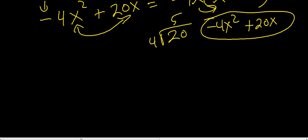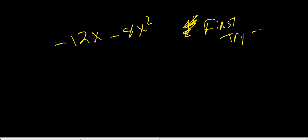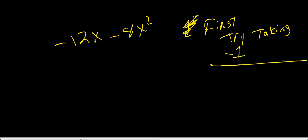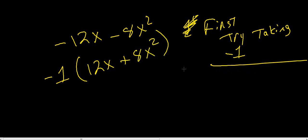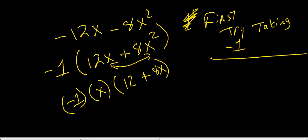In essence, we're just undistributing it. Now let's look at negative 12x minus 8x squared. One thing we can do first is try taking out a negative 1 — this might help if the previous approach didn't make much sense. Factoring out negative 1 gives us 12x plus 8x squared. These positive numbers tend to be easier to work with. Pull out an x — you've got an x here and x squared here. So you have negative 1 times x times the quantity 12 plus 8x. What's the greatest common factor between 12 and 8?